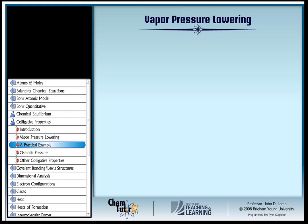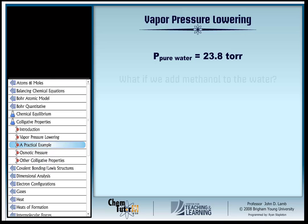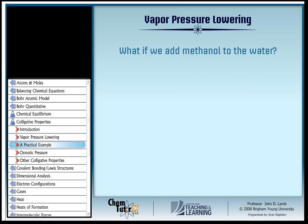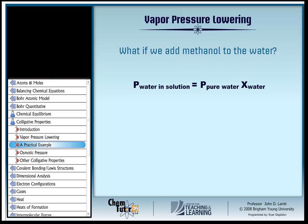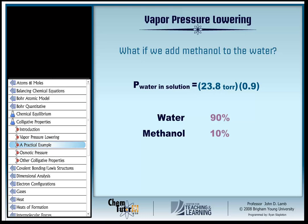For a practical example, take water. At 25°C, the vapor pressure of pure water is 23.8 torr. What if we were to add some methanol to the water? The vapor pressure of the water would go down. According to our mental picture, it ought to go down in proportion to the fraction of molecules that are water molecules as opposed to methanol. If the solution has 90% water molecules and 10% methanol molecules, the mole fraction of water is 0.9. So the vapor pressure of water above this solution would be 0.9 times 23.8 torr, giving us 21.4 torr.